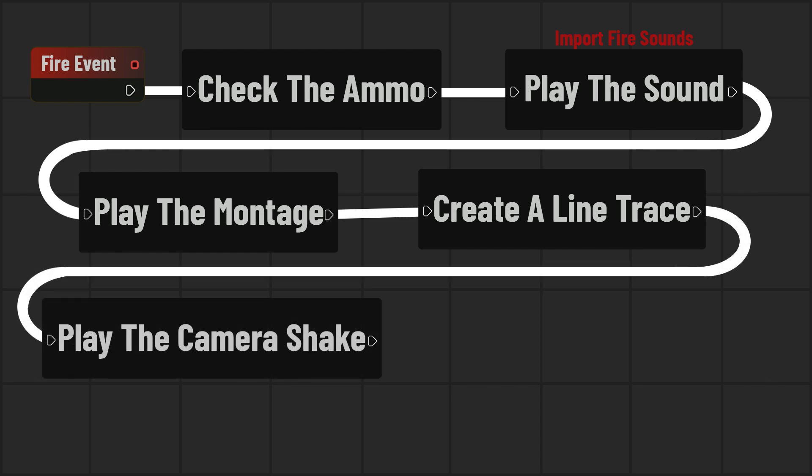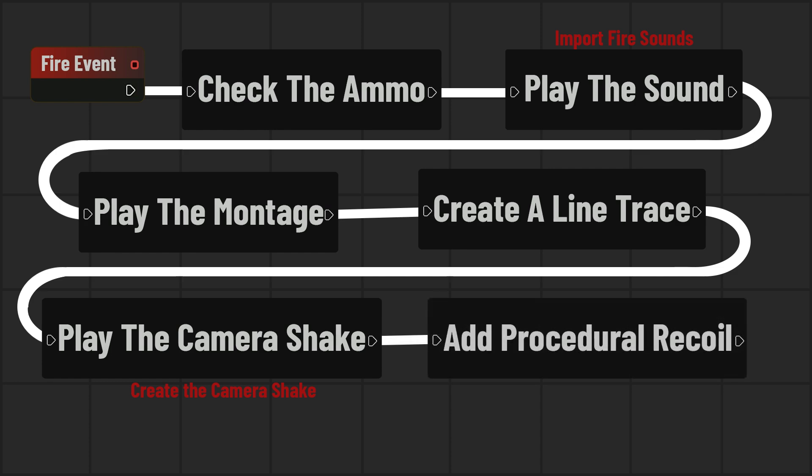Then we play the camera shake to make the gameplay more realistic, and we will create the camera shake in this video. Then we add a procedural recoil to our character, but we will do that in the next video. So this is it for the fire event — I just wanted to explain it before creating it, as it's much easier to understand the logic this way. I will also explain it with blueprints.